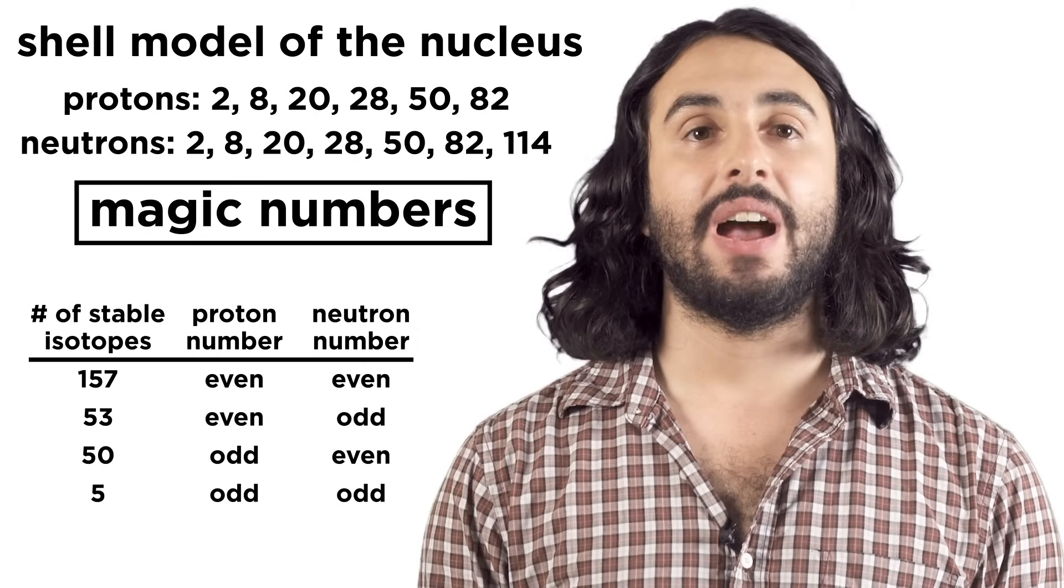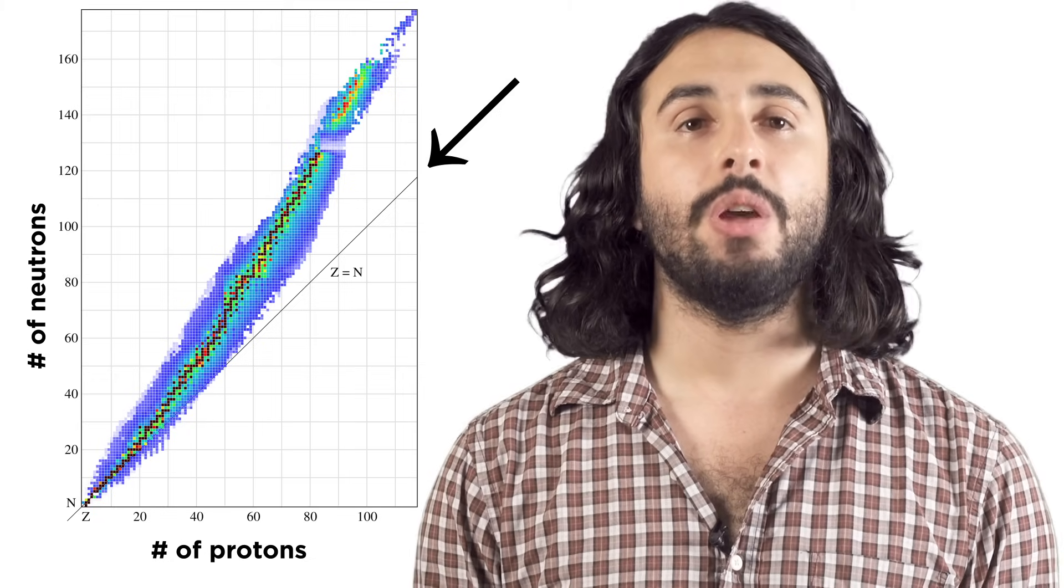And lastly, an atom will tend to want a certain neutron to proton ratio in the nucleus. For smaller atoms this is roughly one to one, which is represented by this line, but for larger atoms this becomes closer to one point five to one, so more neutrons than protons.